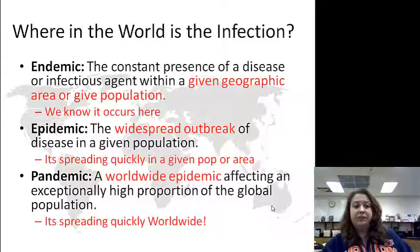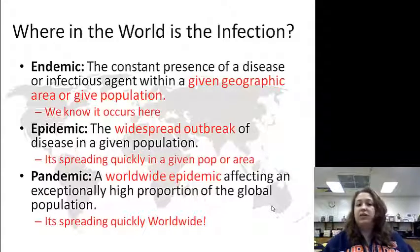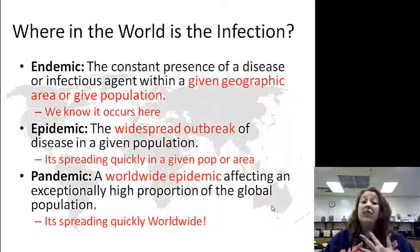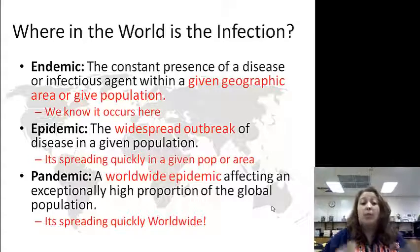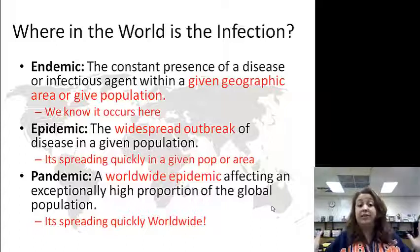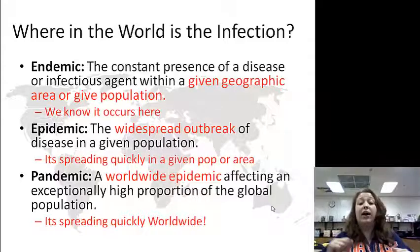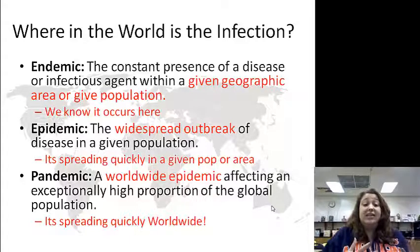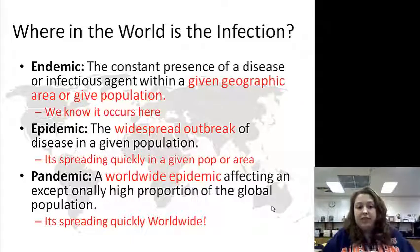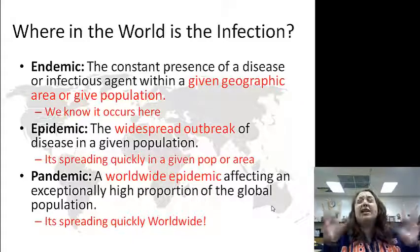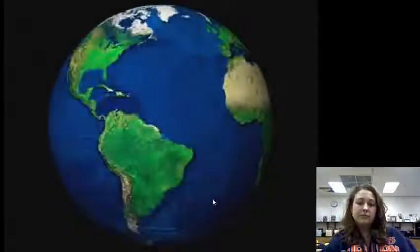Where in the world is the infection? We have endemic, which is the constant presence of a disease or infectious agent within a geographic area or a given population — we know it occurs here. An epidemic is a widespread outbreak of a disease in a given population — it's going rampant but only in a given location. A pandemic is a worldwide epidemic affecting an especially high portion of the global population — it's gone worldwide!